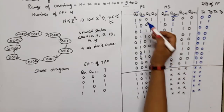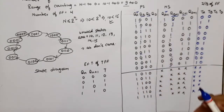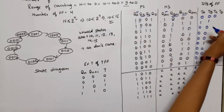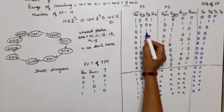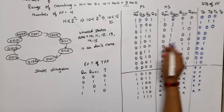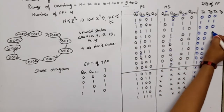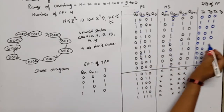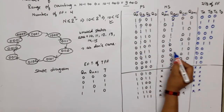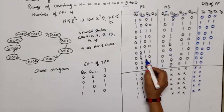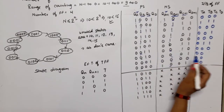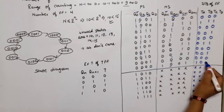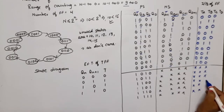For TC, we observe QC and QC+1 across all rows. The QC bit changes at states 8 to 7, 6 to 5, 4 to 3, and 2 to 1 — giving TC = 1 for minterms 2, 4, 6, 8. All other valid states show no change in QC, so TC = 0 for those. Don't cares apply for states 10 through 15.